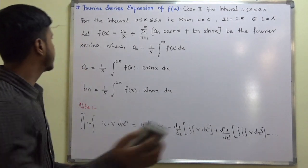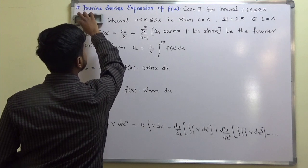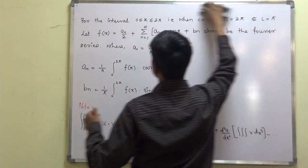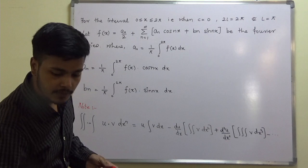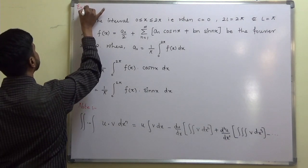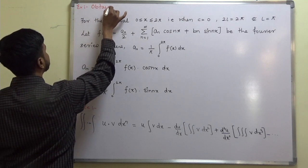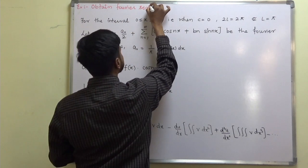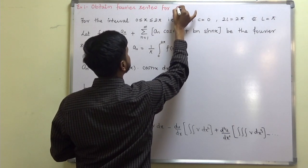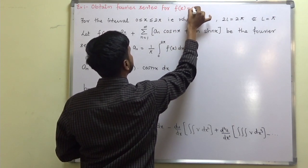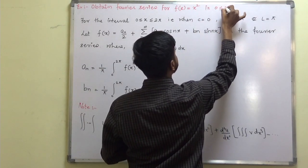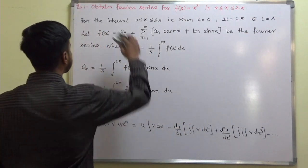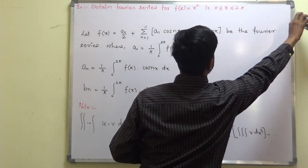Let us see what problem we have for this learning video. The problem says: obtain the Fourier series for f of x equal to x squared in the interval 0 ≤ x ≤ 2π.